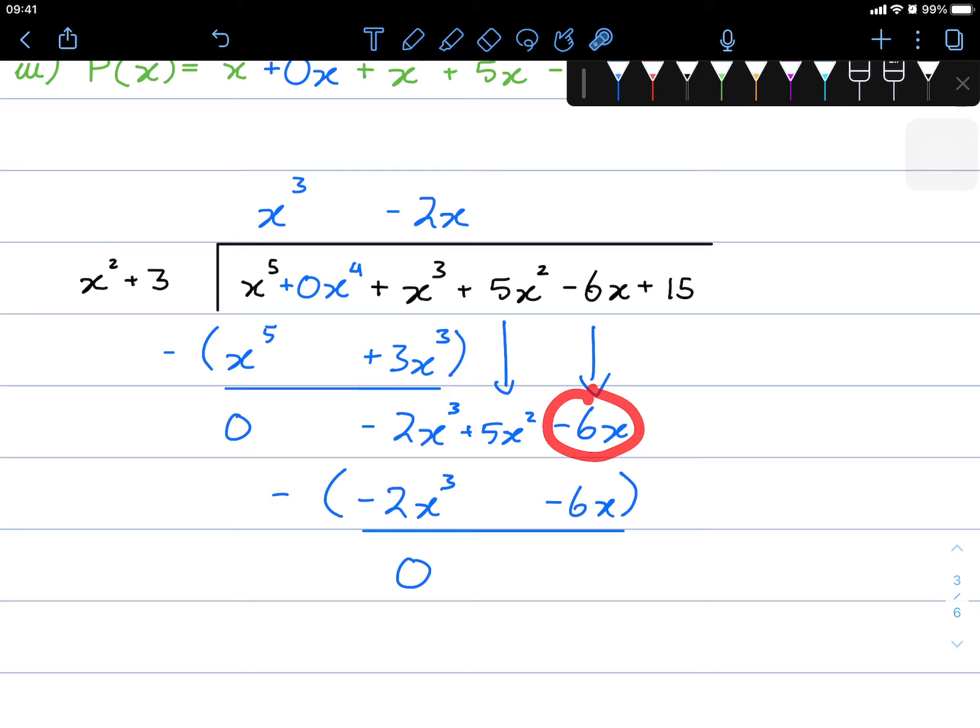Negative 6x minus minus 6x is 0. But in this case here, it's positive 5x squared minus nothing. So we're left with positive 5x squared plus 15.